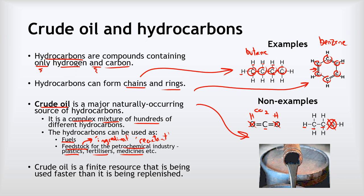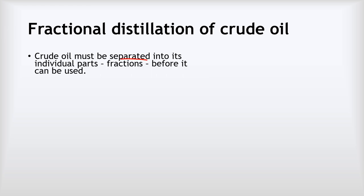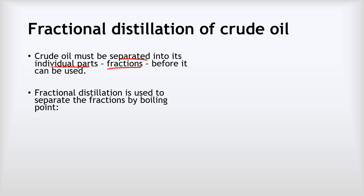Importantly, crude oil is a finite resource — that means it will run out because we are using it faster than it is being replenished. Now, crude oil is a really valuable substance because it's got so many different uses. The trouble is, when you get it out of the ground, it's not at all useful because there are just too many different substances in that mixture. So to make crude oil useful, we must separate it into its individual parts first — and we call those different parts fractions. Although crude oil itself is not useful, each of the individual fractions we can separate it into are super useful.